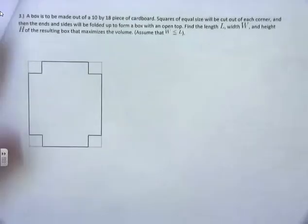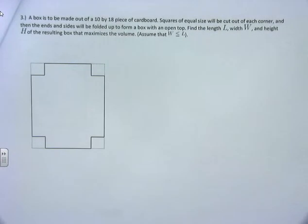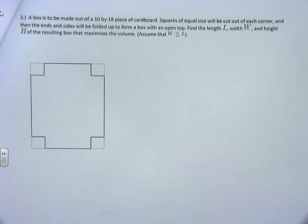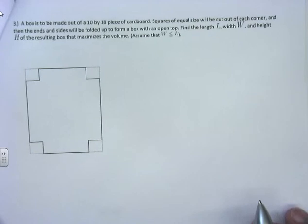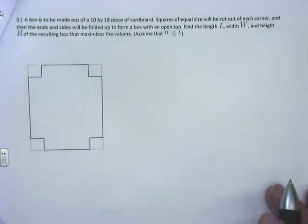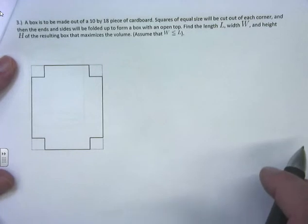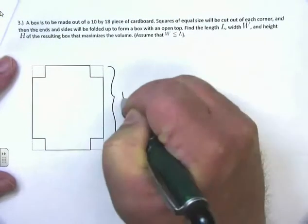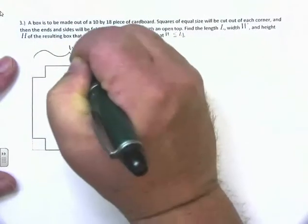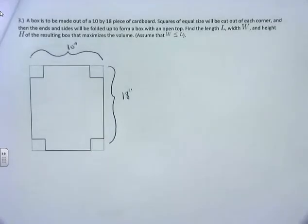Here's another classic problem. A box is to be made out of a 10 by 18 piece of cardboard. Squares of equal size are to be cut out of each corner, and the sides will be folded up to form a box with an open top. Find the length, width, and height of the resulting box that maximizes the volume, assuming width is less than or equal to length. This is 18 inches by 10 inches.